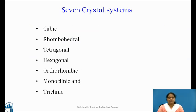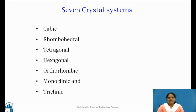The seven crystal systems are: cubic, rhombohedral, tetragonal, hexagonal, orthorhombic, monoclinic and triclinic. Let us now study these seven crystal systems and corresponding Bravais lattices with their features in detail.